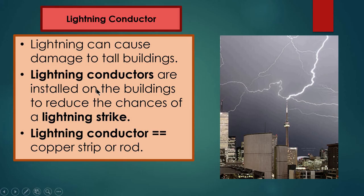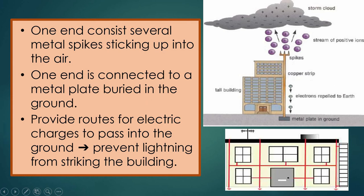What is a lightning conductor? Lightning can cause damage to tall buildings or even to humans inside the buildings. A lightning conductor helps avoid damage — it is installed on buildings to reduce the chances of a lightning strike. It is usually made from a copper strip or copper rod with metal spikes at the top. The spikes attract the lightning and channel it to the ground, preventing it from damaging the buildings or endangering the humans inside.